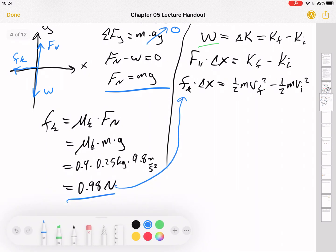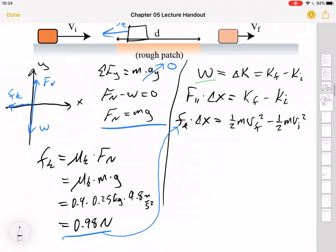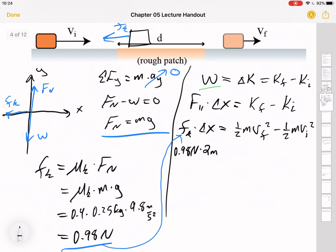0.98 newtons. That's my intermediate step. That goes right here. We're almost there. Now we just need to plug into the work kinetic energy theorem. So 0.98 newtons times 2 meters equals half times 0.25 kilograms times v final squared. That's what I'm solving for. Minus half times 0.25 kilograms times 10 meters per second squared. Can you follow that?